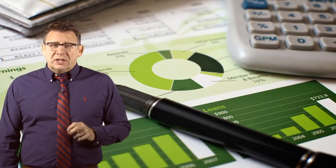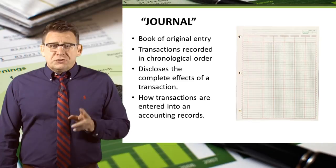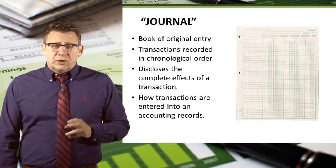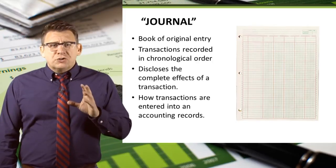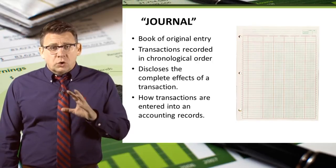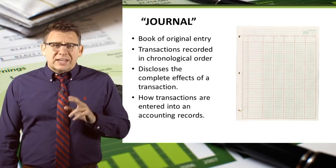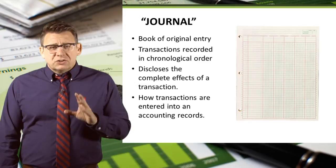Understanding accounting vocabulary is an important first step in learning how accounting really works. So let's look at some key terms and their meanings. The journal, sometimes called the book of original entry or more commonly the general journal, is how transactions are recorded or entered into accounting records. It is a chronological list of a company's transactions.